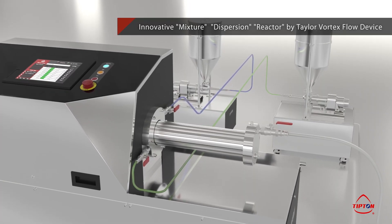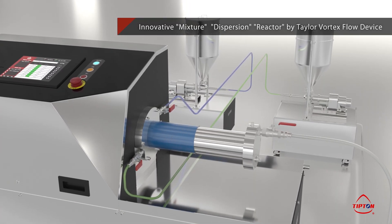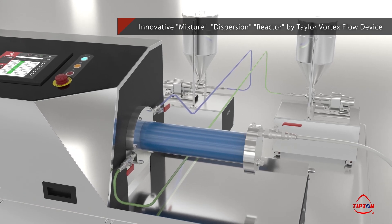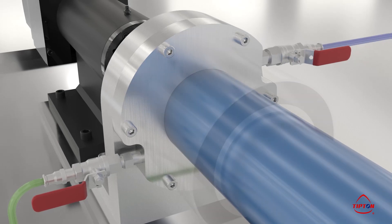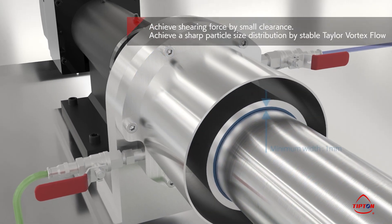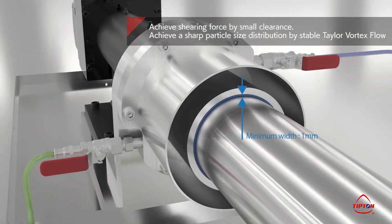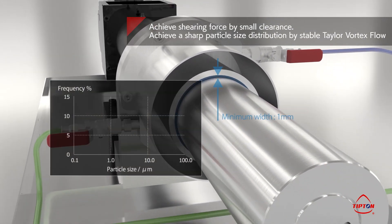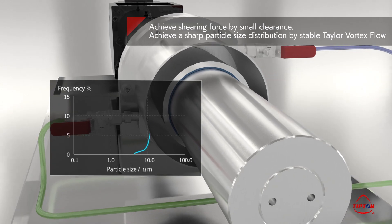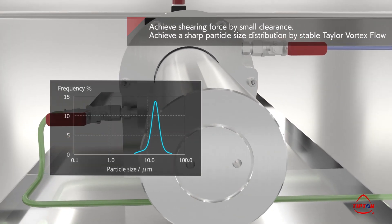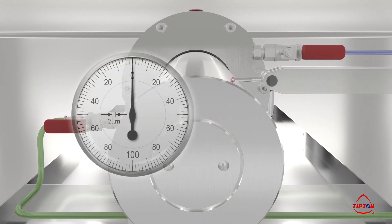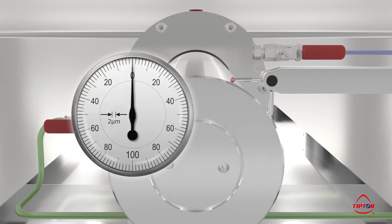TVF, a revolutionary reactor using Taylor Vortex Flow, has many other features. The TVF has high mechanical precision, making it possible to minimize the annular gap while maximizing the rotation of the inner cylinder. This produces high shearing force, making it possible to obtain crystals with a sharper particle size distribution.